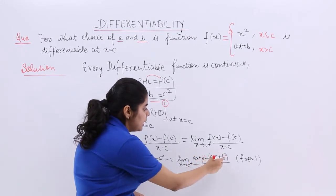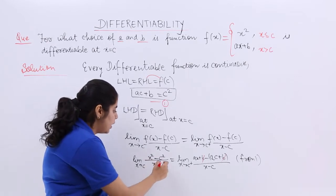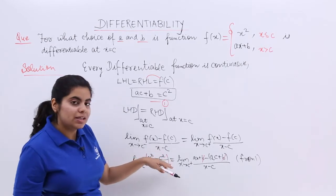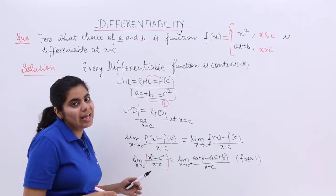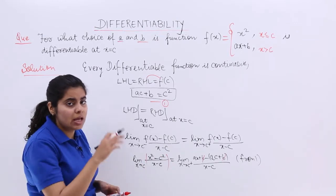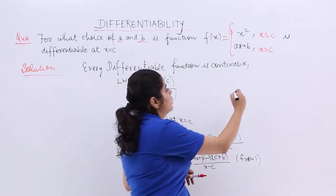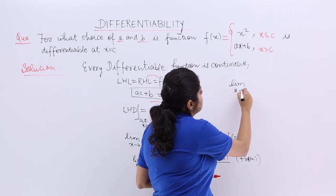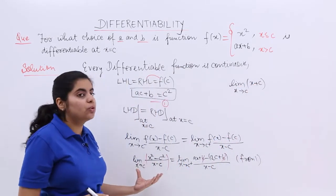Now, B and minus B gets cancelled. Here, at least we have one formula. A square minus B square is equal to A plus B into A minus B. So, it is x square minus c square, which is equal to x plus c into x minus c. x minus c, x minus c gets cancelled. So, it becomes x plus c. Here, I write limit x tends to c, x plus c.